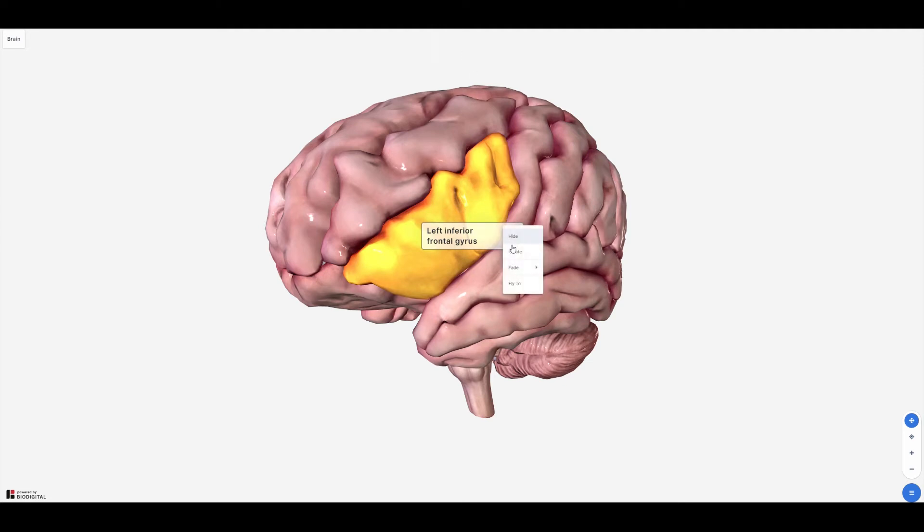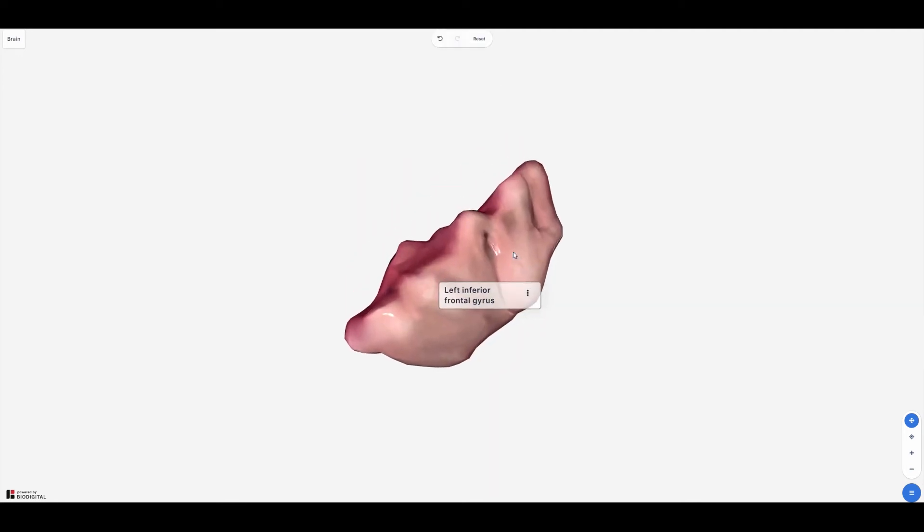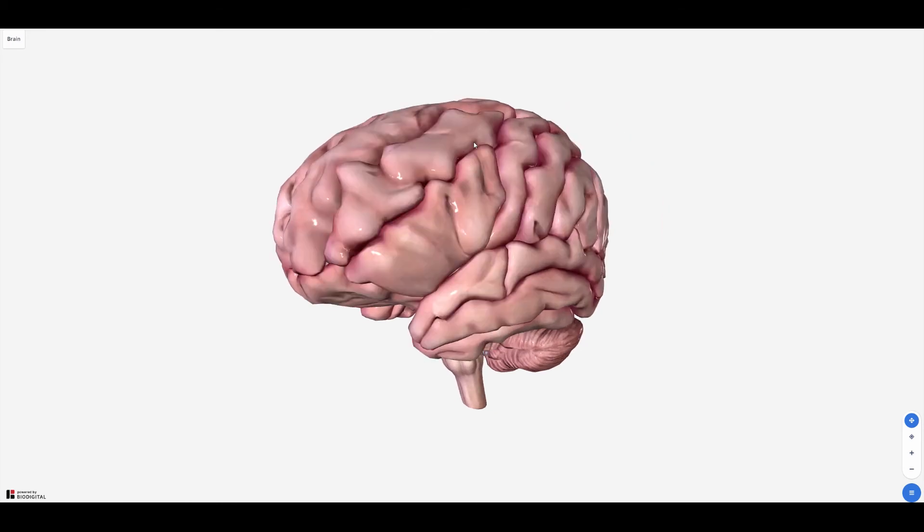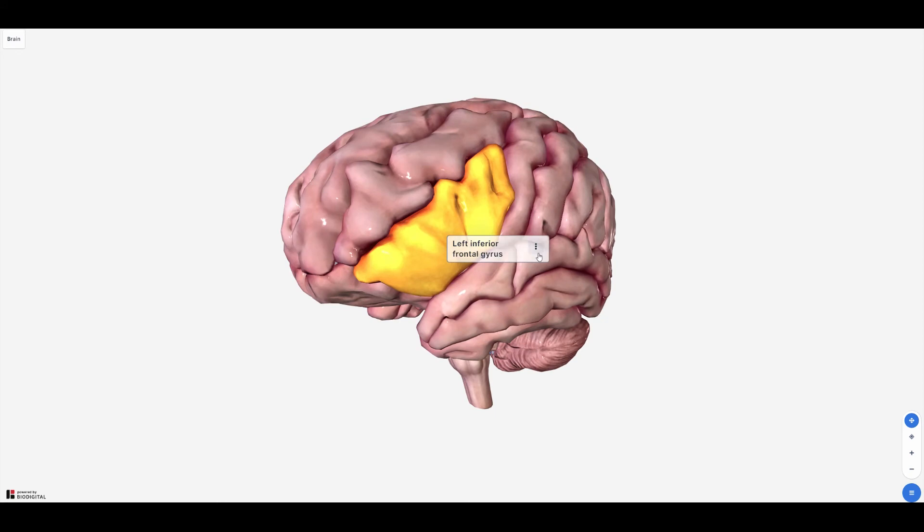Isolate displays only the selected structure. Fade displays a faint outline and makes the structure transparent. You can also fade all of the structures in view except the selected structure.